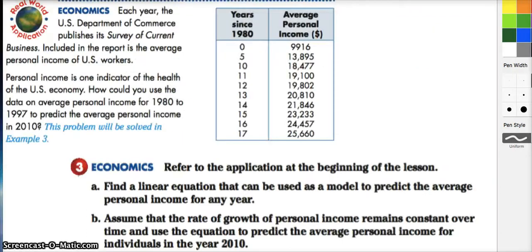So this is our last example, and it will be a little bit extensive. You would probably want to use a graphing calculator such as Desmos that we talked about. Here we have that each year the U.S. Department of Commerce publishes its survey of current businesses. Included in the report is the average personal income of U.S. workers. Personal income is one indicator of the health of the U.S. economy. How could you use the data on average personal income from 1980 to 1997 to predict the average personal income in 2010? Now we know this is obviously an old textbook, but let's see if we can do it anyway. So what they did is they started off their data with zero, so that's year zero being 1980, so years since 1980, so zero years would be 1980, so forth and so on. So you can see that this represents up to 1997.